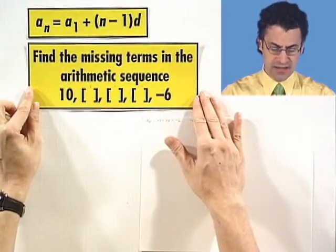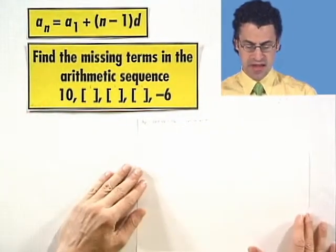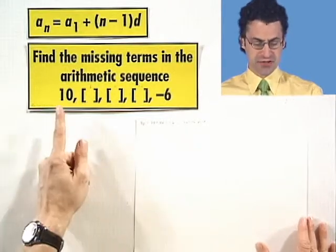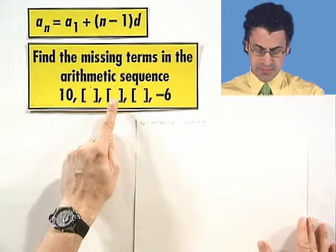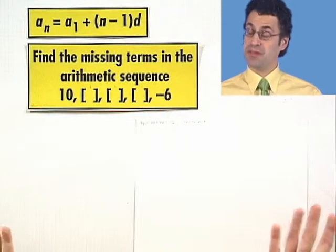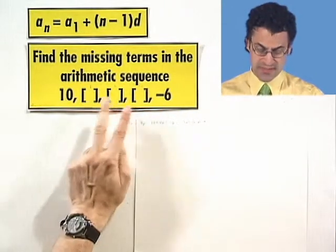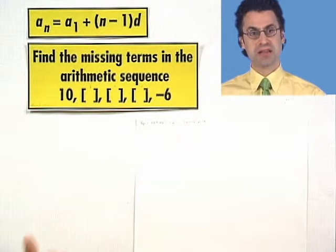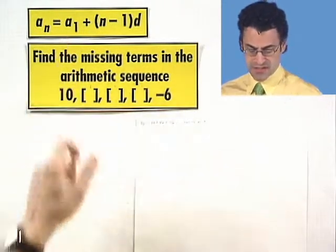Our mission now is to find the missing terms in the arithmetic sequence. And we know it starts with 10, then there's something, something, something, and then we have a negative 6. We're not given what the constant difference is because we don't have consecutive terms anywhere. But I claim we can find that constant difference by using this formula.